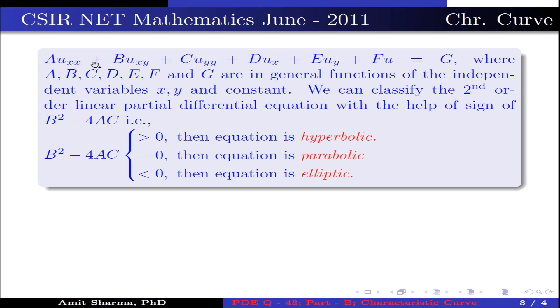Au_xx + Bu_xy + Cu_yy + Du_x + Eu_y + Fu = G where A, B, C, D, E, F and G are in general functions of independent variables x, y and constant.